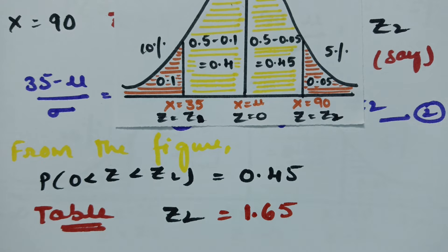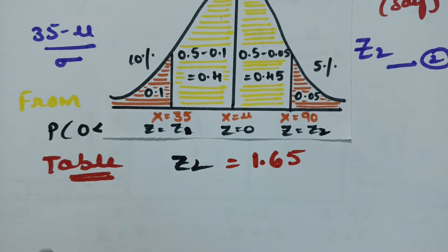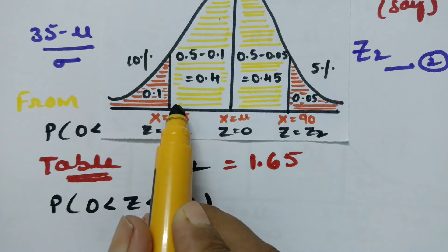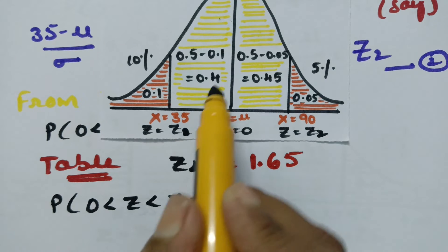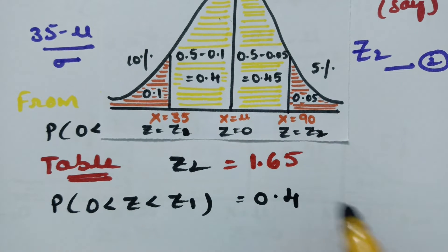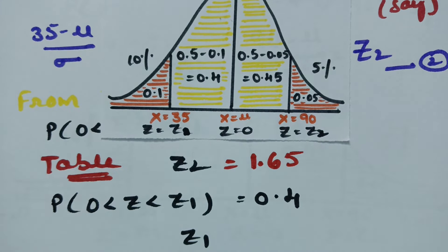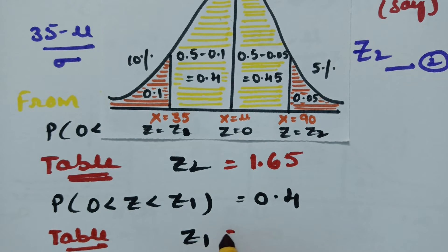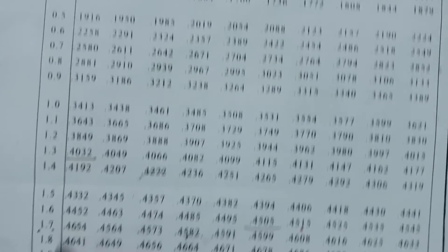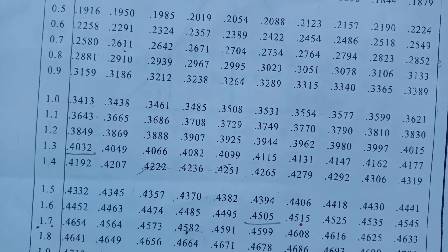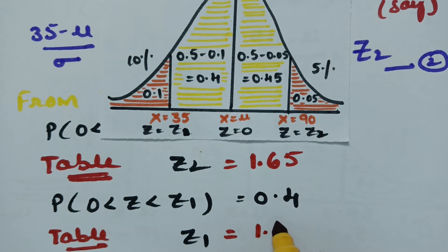From the figure, the probability of 0 less than z less than z1, that is the distance between z equals 0 and z equals z1, is 0.4. From the z-table, looking up 0.40, the value corresponds to 1.3 under column 0. So z1 equals 1.3.